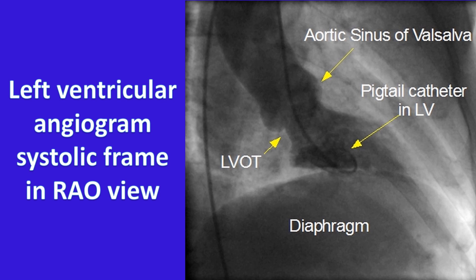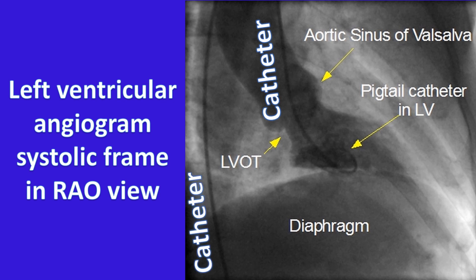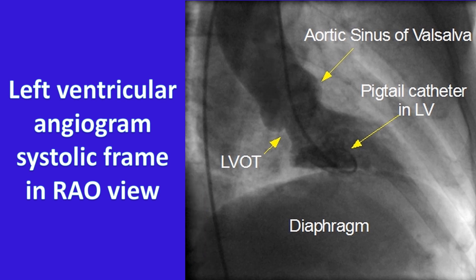The catheter is visible in the ascending aorta and descending aorta, meaning the pigtail catheter was introduced through the transfemoral route. Contrast-filled bulges in the root of the aorta are the aortic sinuses of Valsalva.